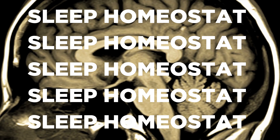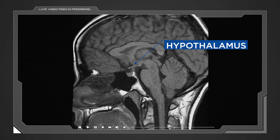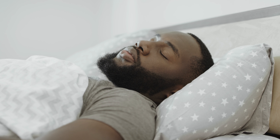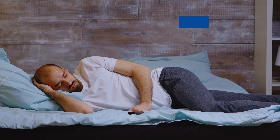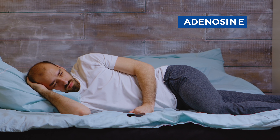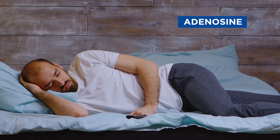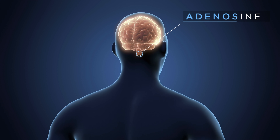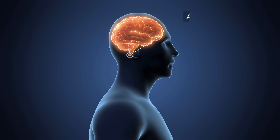Let's talk about your sleep homeostat. This is your brain's version of a thermostat, but instead for sleep. When you're awake, the hypothalamus part of your brain secretes something called orexin, which is a chemical that makes you alert. It circulates in your brain during wakefulness and virtually disappears during non-REM sleep. Also, the accumulation of adenosine in your brain is the main biochemical process of lulling you to sleep. So the longer you're awake, the more adenosine accumulates in the brain, and that's what makes you tired.